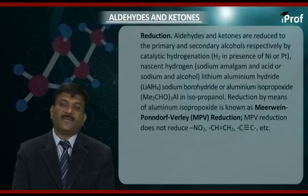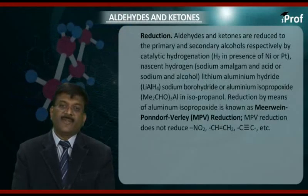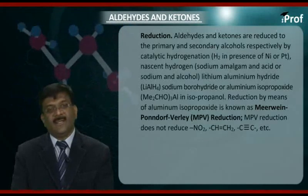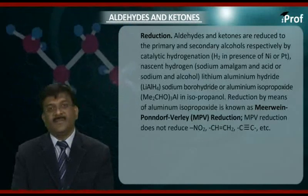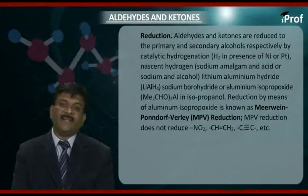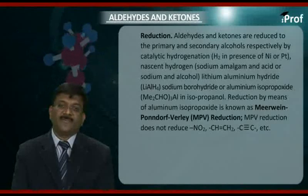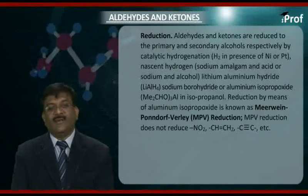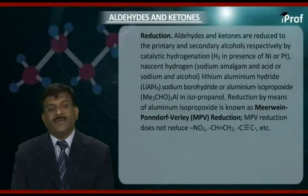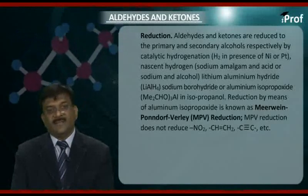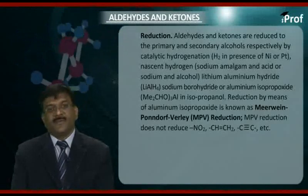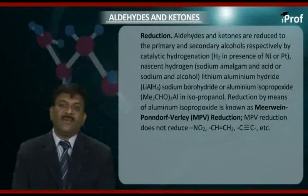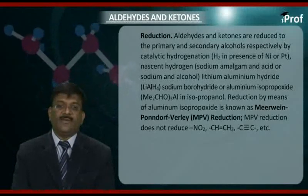Next, reduction. Aldehydes and ketones are reduced to the primary and secondary alcohols, respectively, by catalytic hydrogenation — that is, hydrogen in presence of nickel or platinum — or by nascent hydrogen, that is, sodium amalgam and acid, or sodium and alcohol.